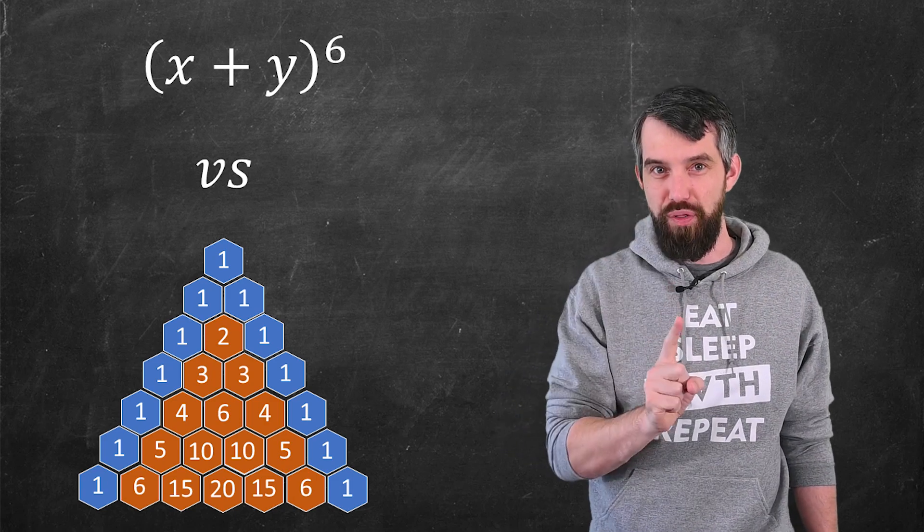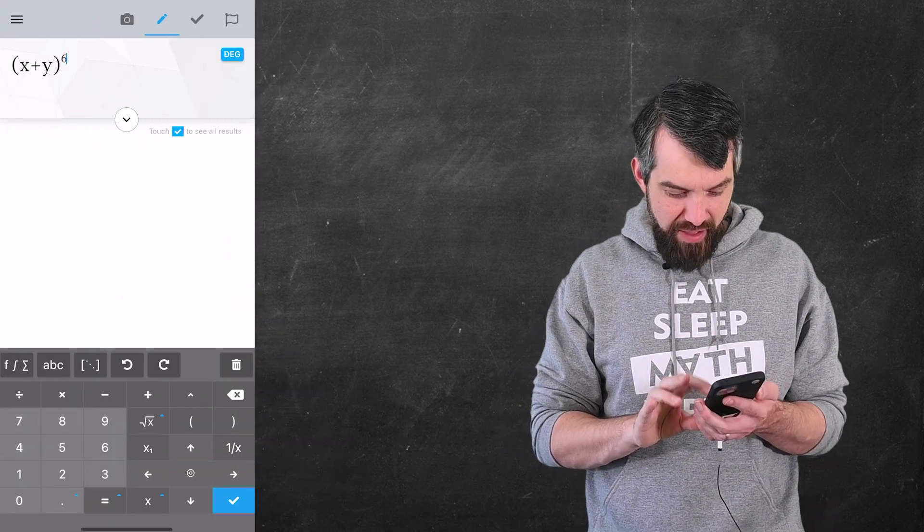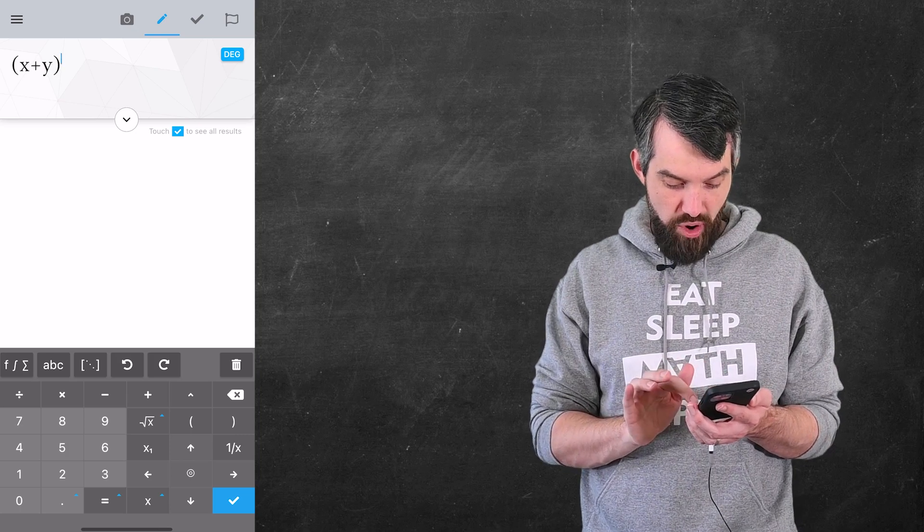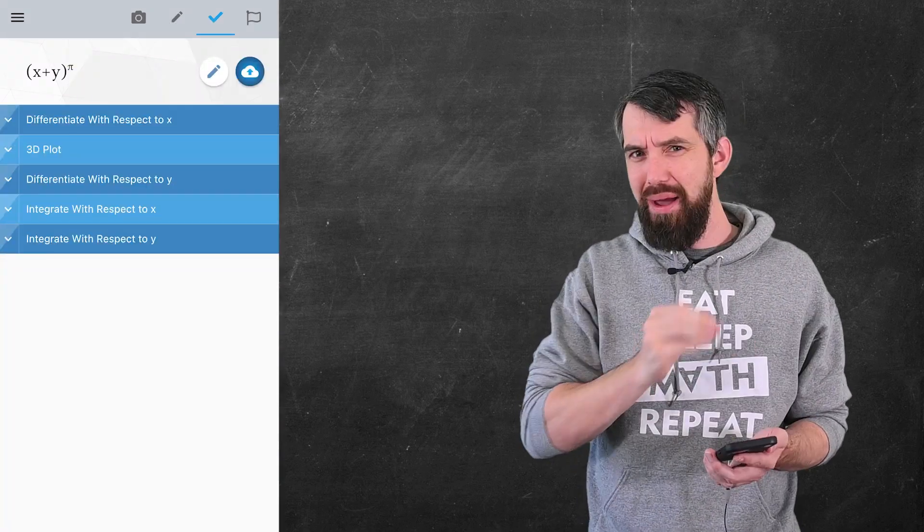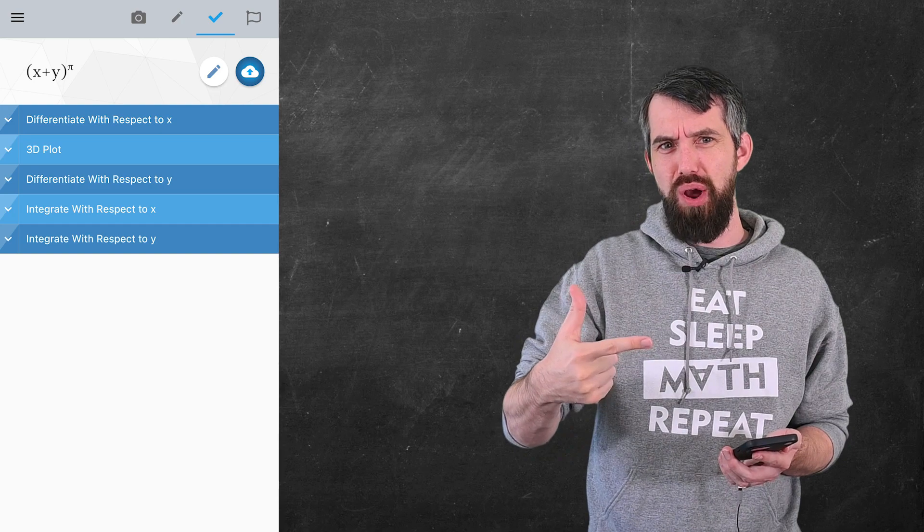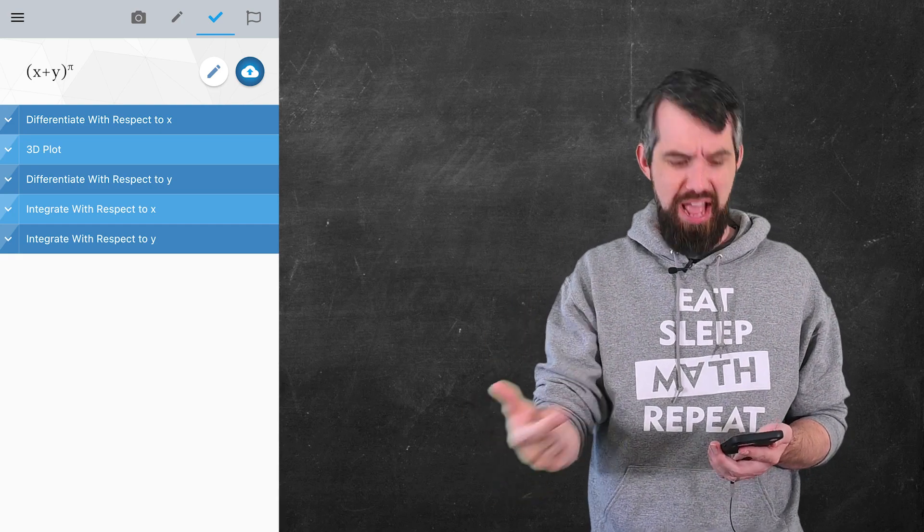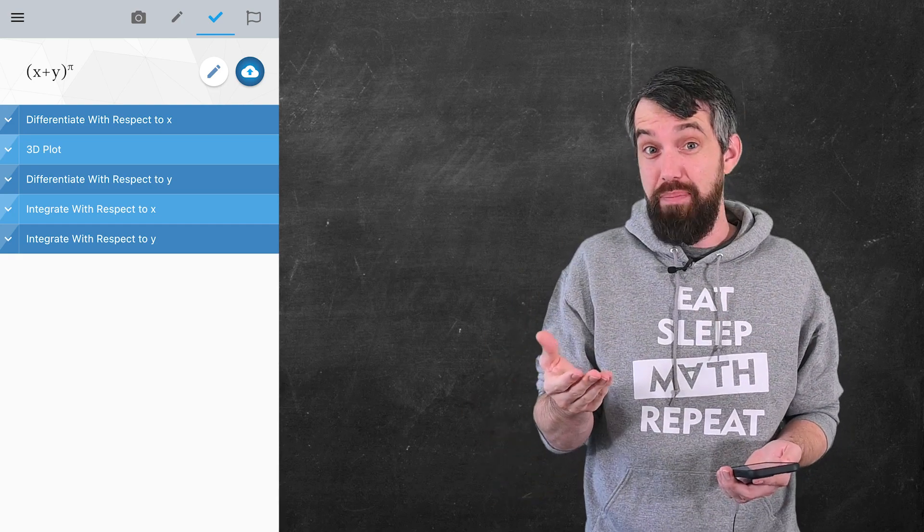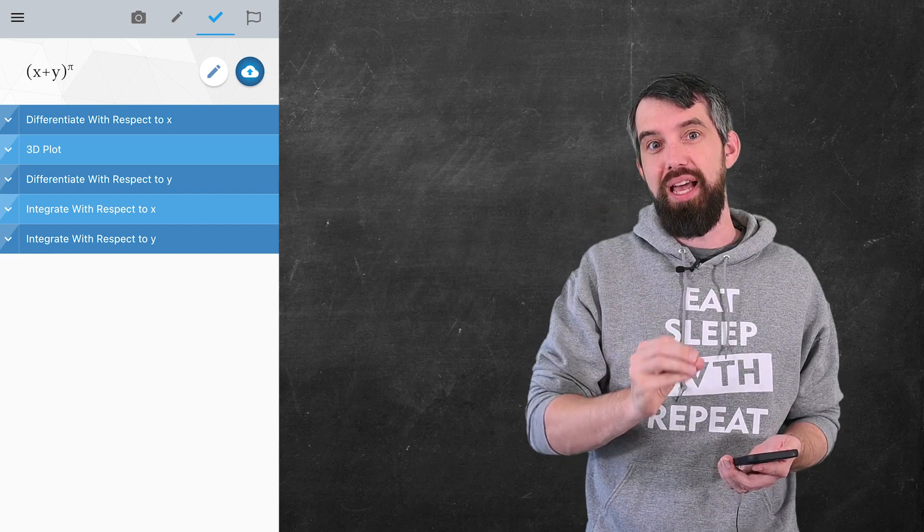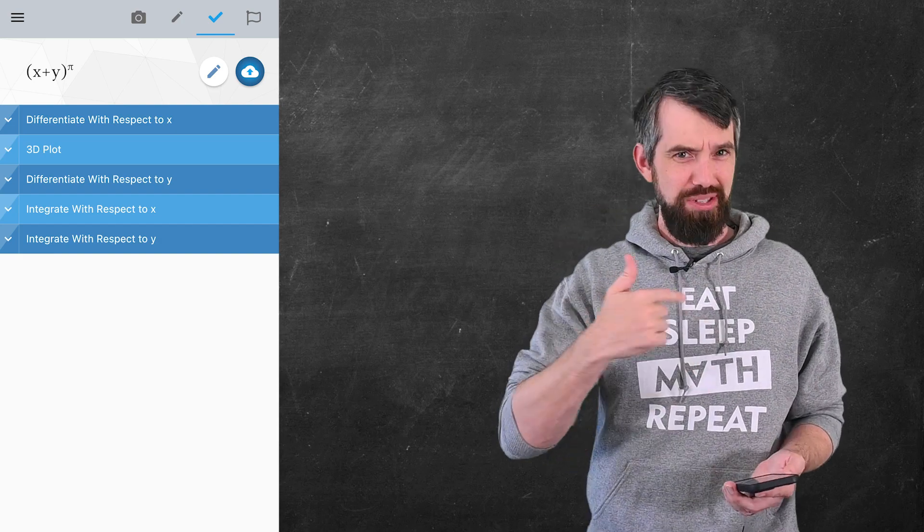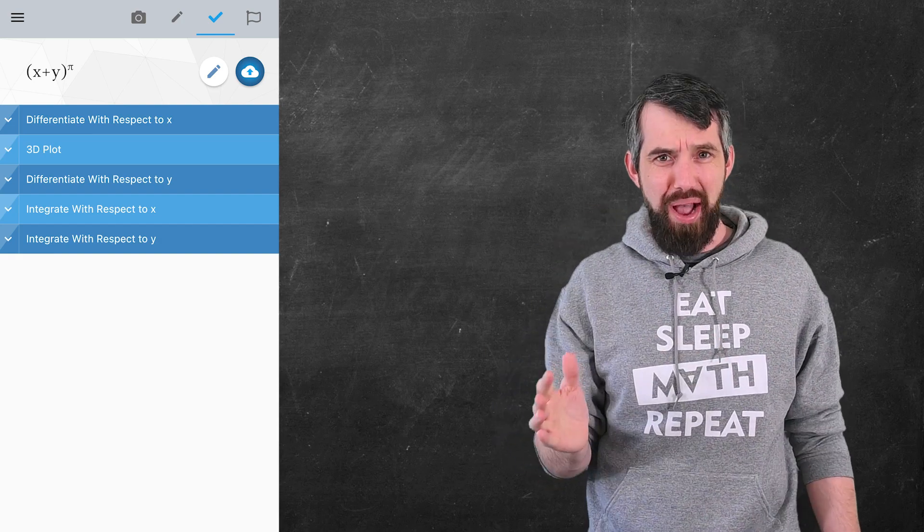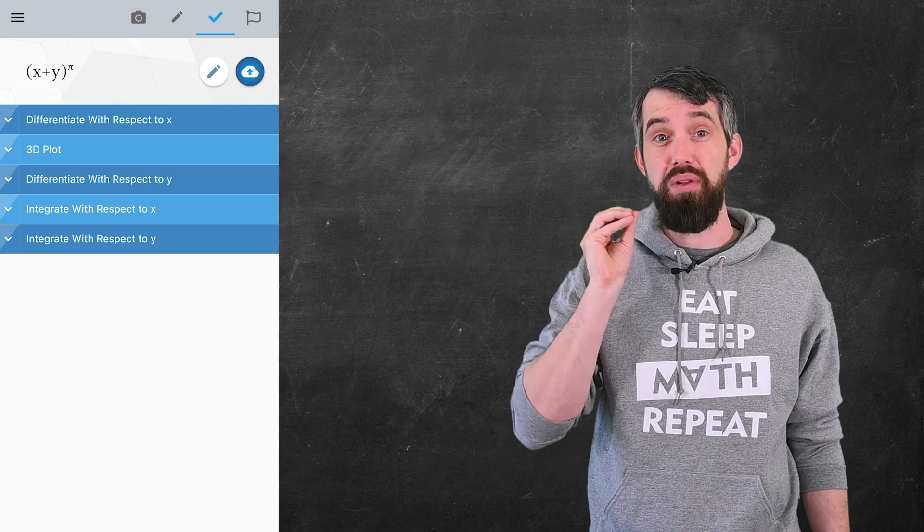But then I want to go further. Instead of x plus y to the sixth, what say if I put x plus y to the, oh I don't know, maybe to the power of pi? Well, now I have a problem, because I actually don't know what algebra I could do to solve that. In fact, Maple Calculator doesn't even see an expand button, because you cannot expand this as a finite polynomial. So I'm also going to have to answer the question of how do I move beyond the binomial theorem to something called binomial series.